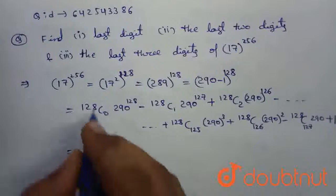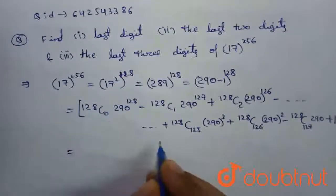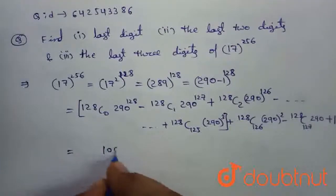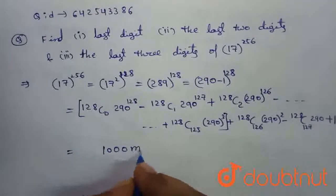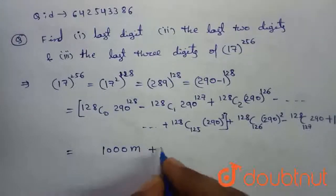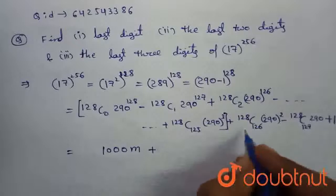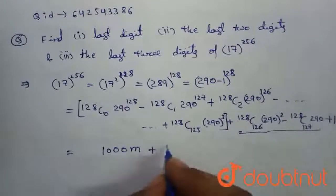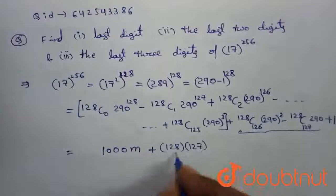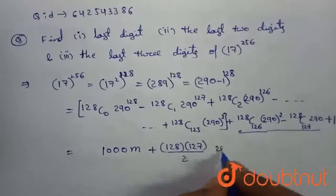After simplifying from here to here, we will get 1000 into some M. M is a multiple of some integer. And after simplifying these three, we will get 128 into 127 divided by 2, 290 power.